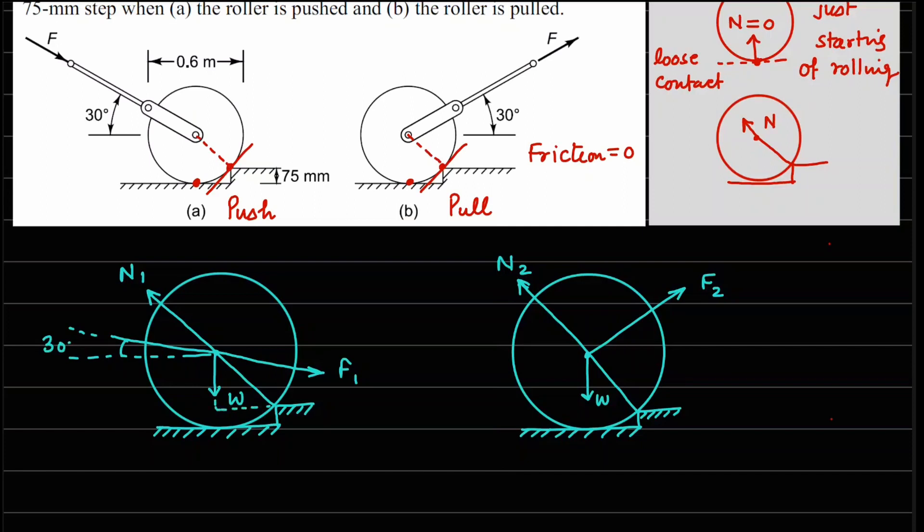Now what about the angle of normal reaction N1? For that we can focus on this triangle right here. This dimension right here is half of the diameter. Diameter is 600 mm or 0.6 meter, so that's why this length is 300 millimeters. And this vertical height is the total radius minus the step, so 300 minus 75, so this becomes 225. If I call this angle alpha, we can find out the value of sin alpha which is 225 divided by 300, and this gives us a value of alpha equals to 48.6 degrees.